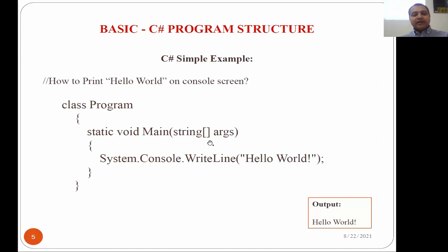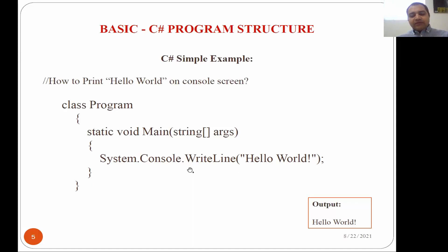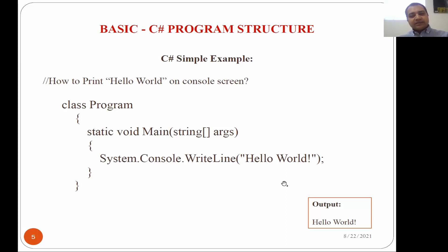Inside the main body we use the namespace System. Console is a class name, WriteLine is a method, and we are passing a string here to print it. The statement is Hello World. Without the reference we cannot do anything here. WriteLine is a method from the Console class, and Console is part of the namespace System. System is a root namespace containing a collection of classes, which have data (variables) and behavior (methods).